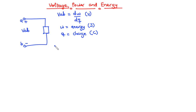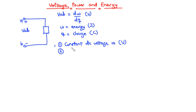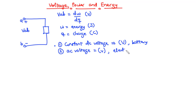Like electric current, a constant DC voltage is represented by capital V, and a sinusoidally time-varying voltage, which is simply called an AC voltage, is represented by a small v. A typical example of a constant DC voltage source is a battery, and that of an AC voltage source can be an electric generator.